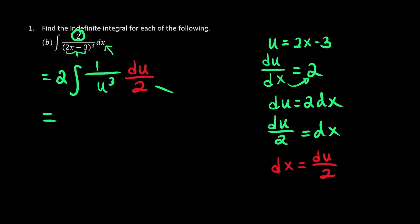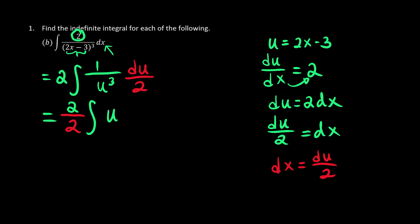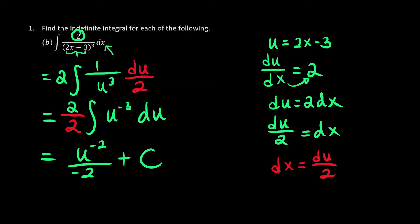This looks a bit messy, so we're going to bring the fraction out. We say it's 2 over 2 because it's at the denominator, and then do it as usual. Whenever we have a power at the bottom, we bring it up before we integrate — remember that 1 over x to the power of n is the same as x to the power of negative n. So u to the power of 3 becomes u to the power of negative 3, and we integrate with respect to u. 2 divided by 2 is 1. u to the power of negative 3 increases by 1 to become negative 2, divided by negative 2, plus c — because it's an indefinite integral.